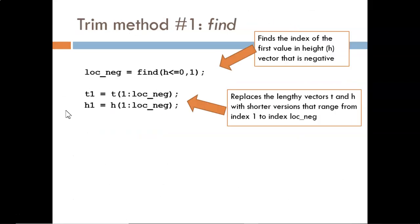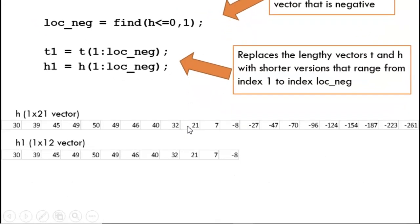This first method uses the find command. Here we ask MATLAB to scan through the height vector and return just the first index where h goes negative. We then use that index to extract a shorter vector for both time and height. The original h vector is shown here with the length of 21. The trimmed h1 vector now only has 12 values, and the very last value is the first case where the height drops negative.